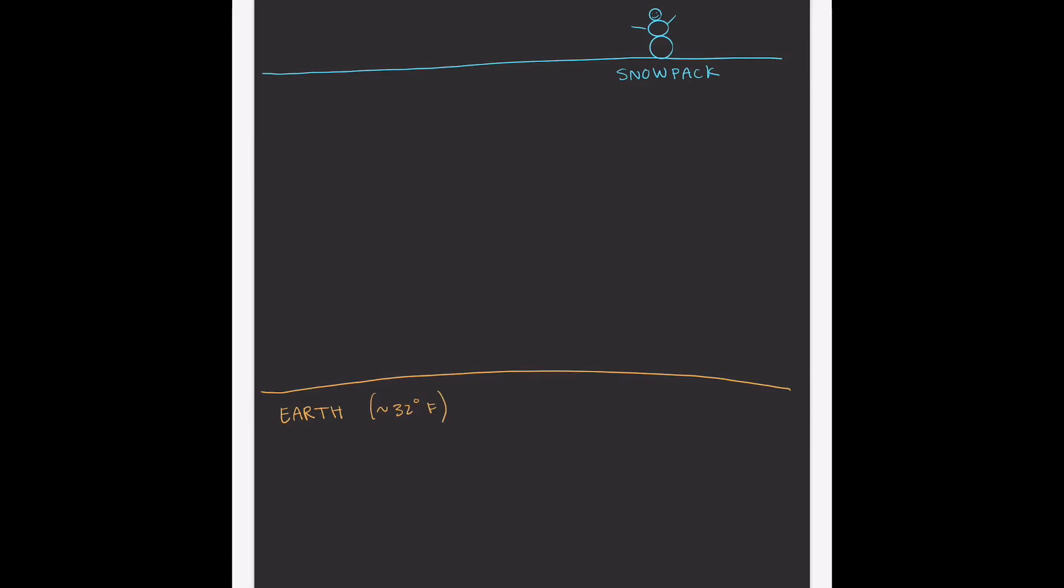And you guys will remember that freezing, 32 degrees Fahrenheit, is the temperature at which liquid water becomes solid. But it's also the temperature at which solid water becomes liquid. Those two phases are interchanging constantly. So there's a lot of liquid water at the very base of the snowpack, just above the earth.